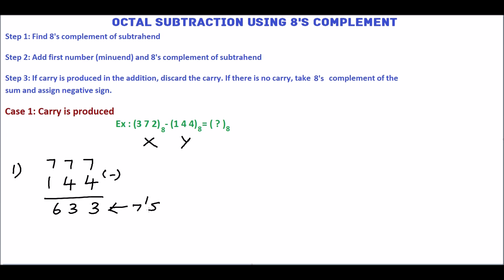So add 1 with this to get the 8th complement. 3 plus 1 is 4, 3, 6, 6, 3, 4 is the 8th complement of y. In step 2, add x and 8th complement of y, which is 6, 3, 4. Add this.